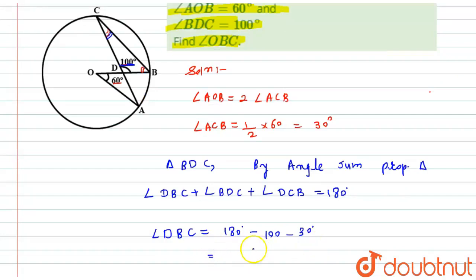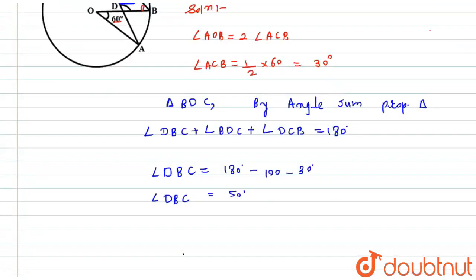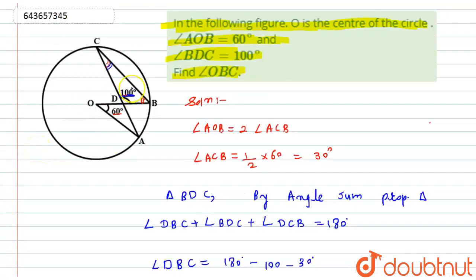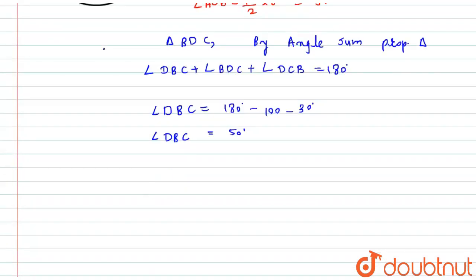If I subtract from 180, I will get 50 degrees as angle DBC. This angle DBC can also be written as angle OBC, so the angle OBC will become equal to 50 degrees.